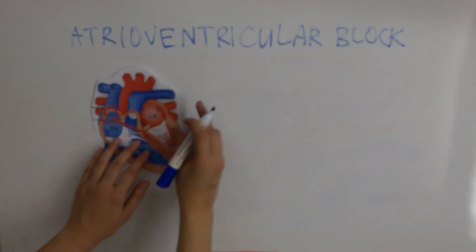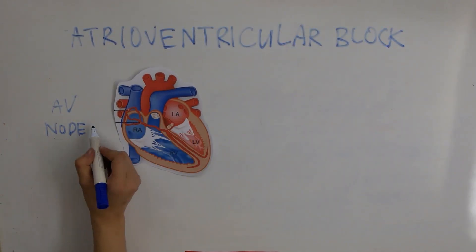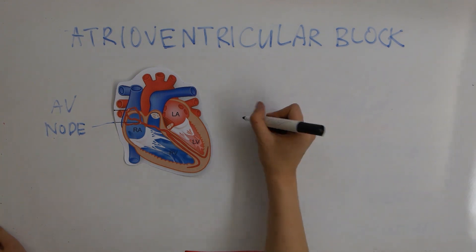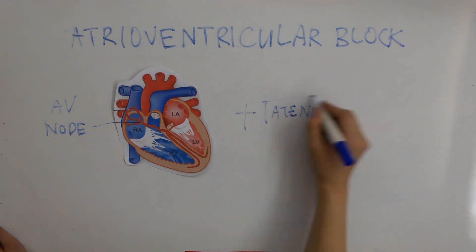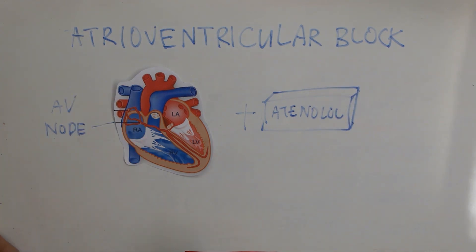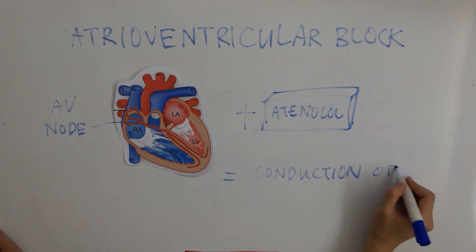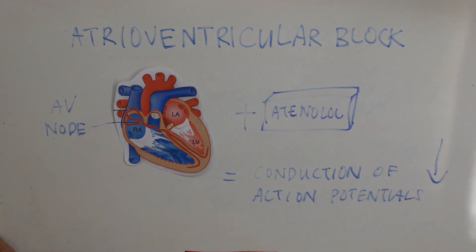Another adverse effect is atrioventricular block. When beta blockers are used, a decrease in conduction velocity is seen at the atrioventricular node, meaning that there is a longer delay in conduction of action potentials through the atrioventricular node and the time between atrial and ventricular contraction is increased.